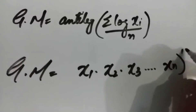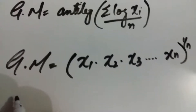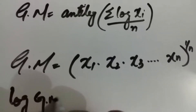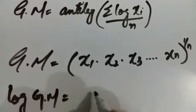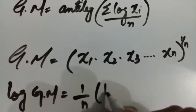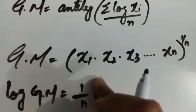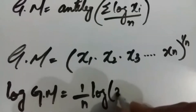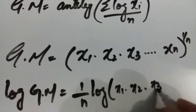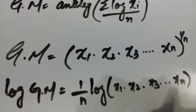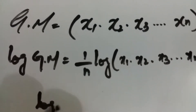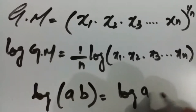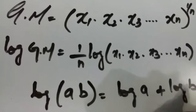To remove the 1 over n power, we apply log to both sides. Log of geometric mean becomes 1 over n multiplied by log of x₁ times x₂ times x₃ up to xₙ. Using the log property log(ab) = log a + log b, this expands further.